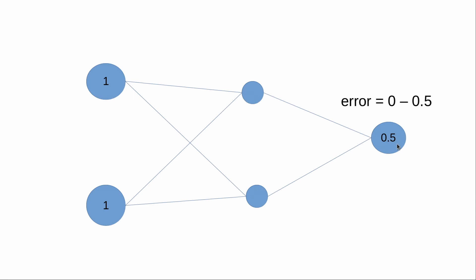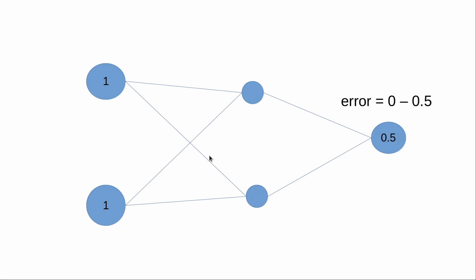At this point we look at the output and compare it to the correct answer. The correct answer here is zero. We ask: how much does the output differ from the correct answer? It's zero minus 0.5, which is minus 0.5. So that output node has an error of minus 0.5. We don't have the error for the hidden nodes yet, so we back-propagate this error to calculate the hidden layer errors, and then we tweak the weights and biases accordingly. I'm not going to explain the exact backpropagation formula here, but a simple internet search will give you the formula.